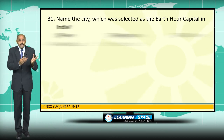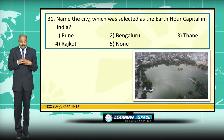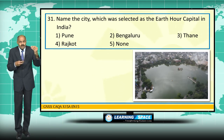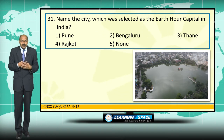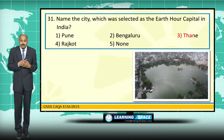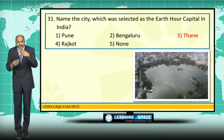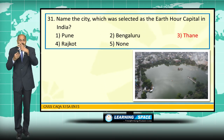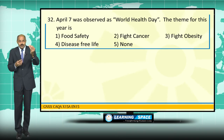Thane, near Mumbai, was declared as the Earth Hour capital in India this year — last year it was Coimbatore. Globally, Seoul in South Korea was declared as the global Earth Hour capital. Please don't forget these two cities.